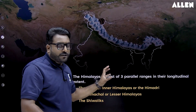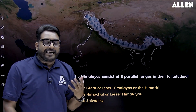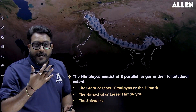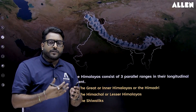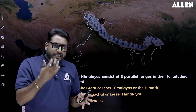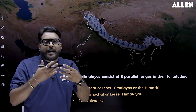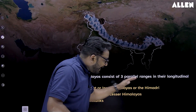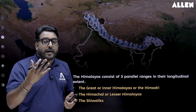The Himalayas consist of three parallel ranges based on their longitudinal extent. The first and foremost range is the Great or Inner Himalayas, also called the Himadri. These are the most continuous ranges and consist of the most lofty and prominent peaks like Mount Everest, Kanchenjunga, Makalu, and Nanga Parbat. Their average height is above six thousand meters.